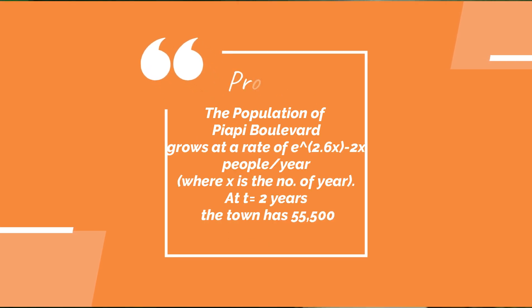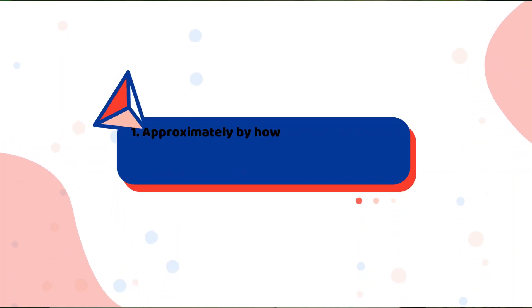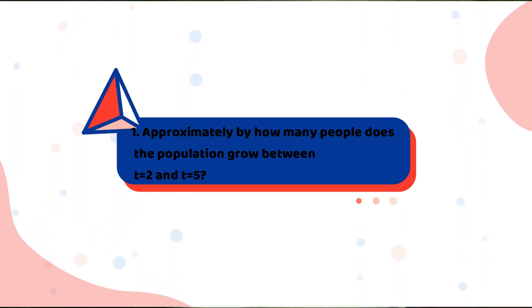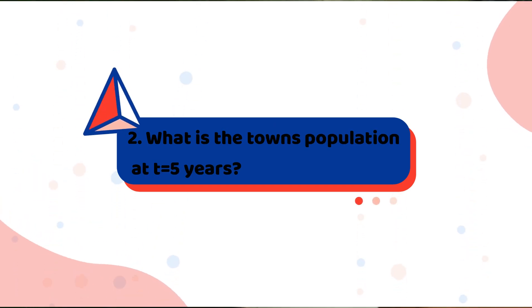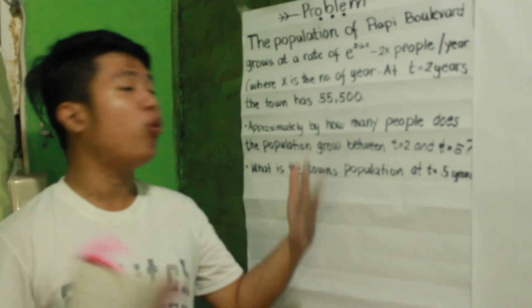Here is the problem: the population of Piampi Bolivar grows at a rate of e raised to 2.6x minus 2x people per year, where x is the number of years. At year 2, the town has 55,500 people. Question number 1: approximately by how many people does the population grow between year 2 and year 5? Question number 2: what is the town's population at year 5?